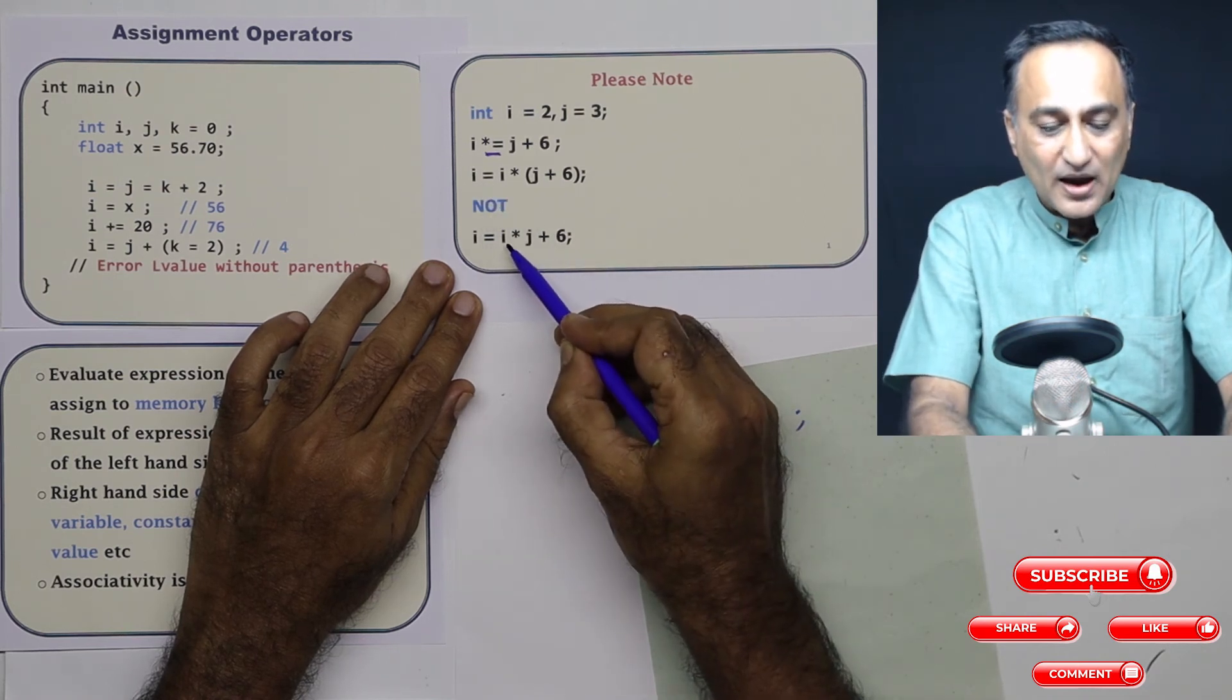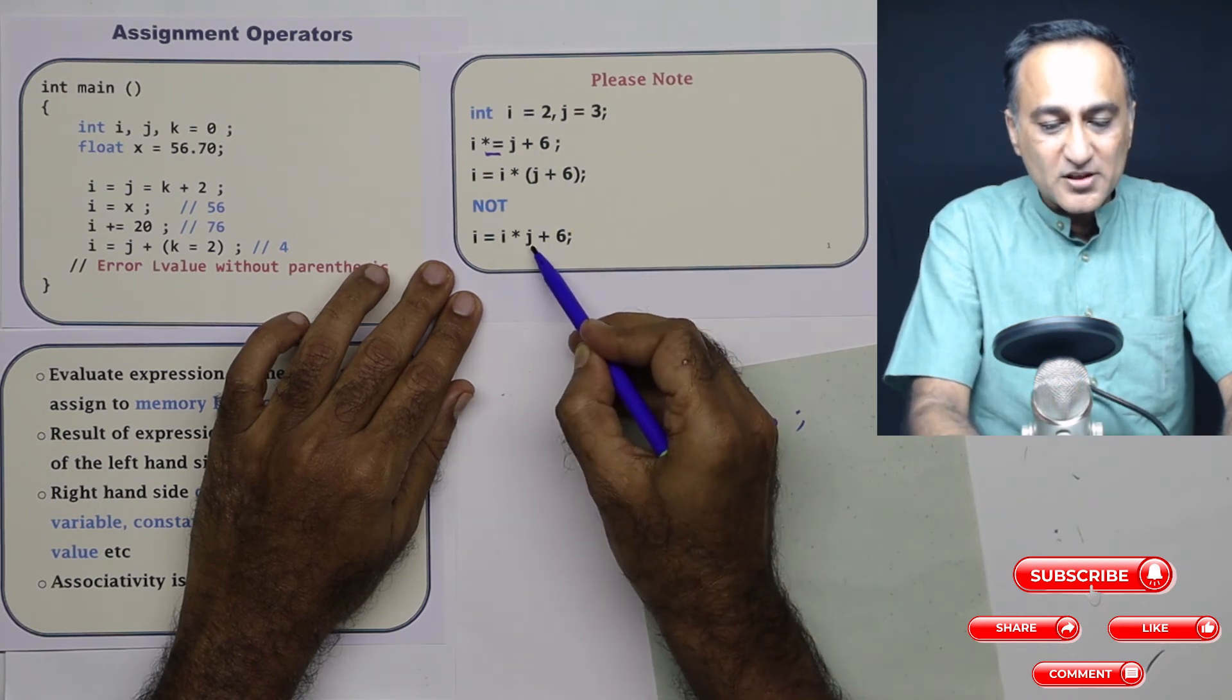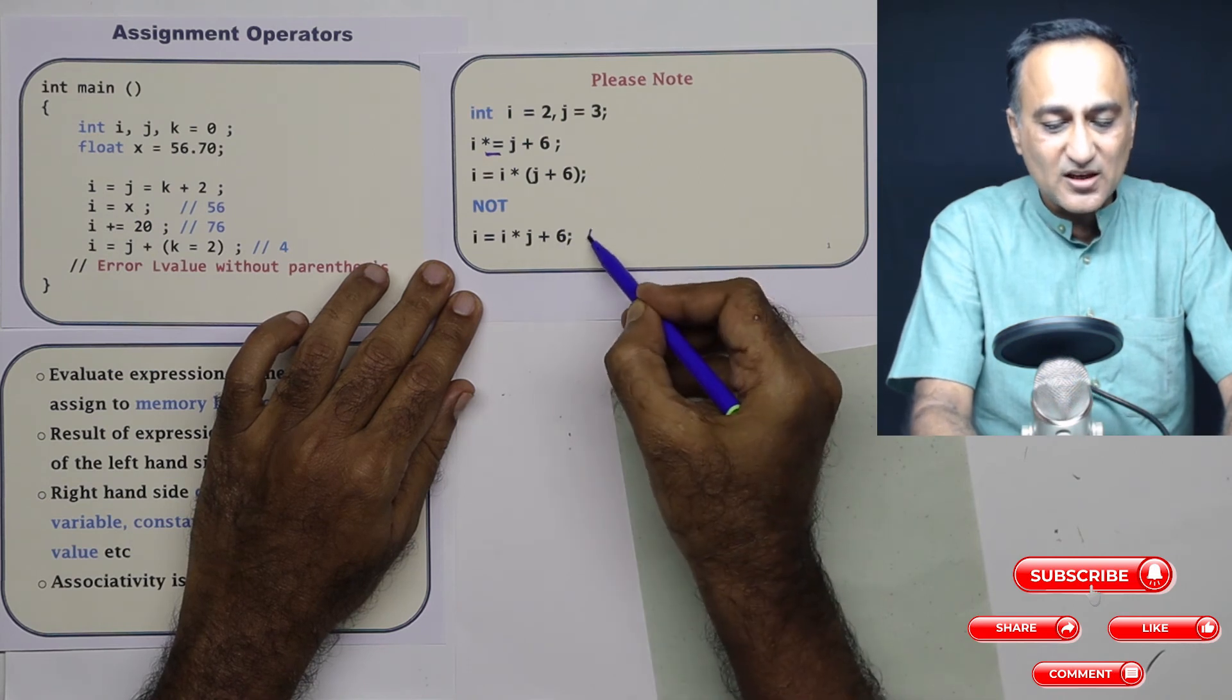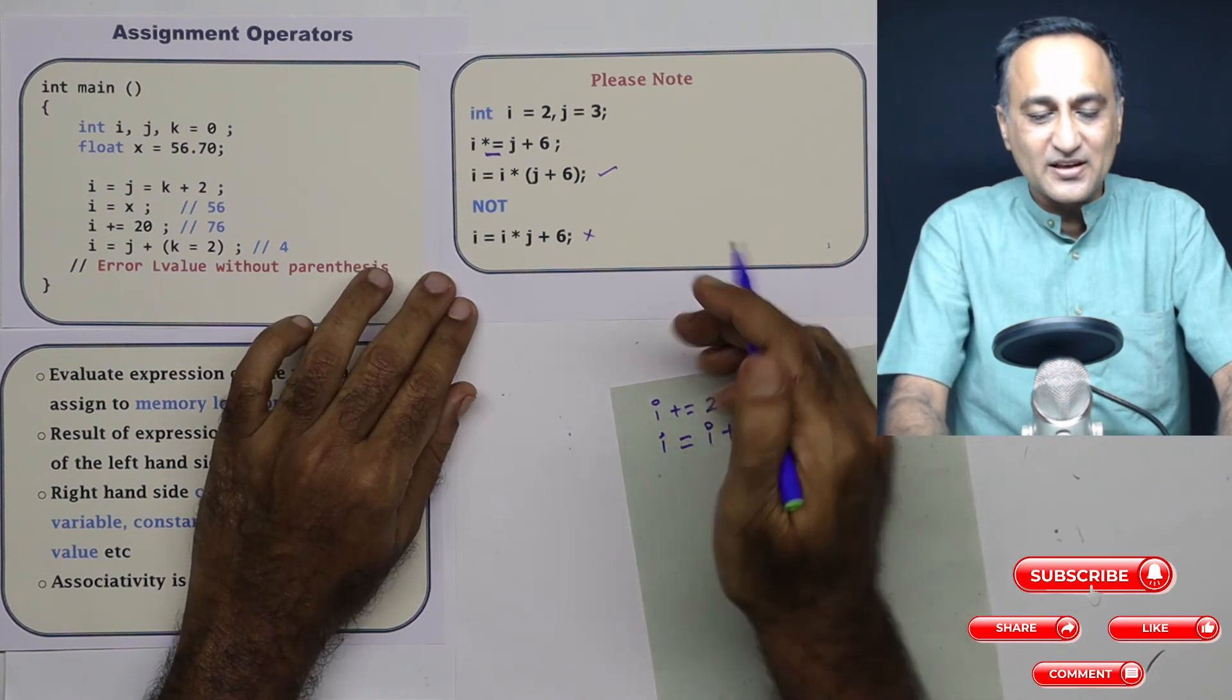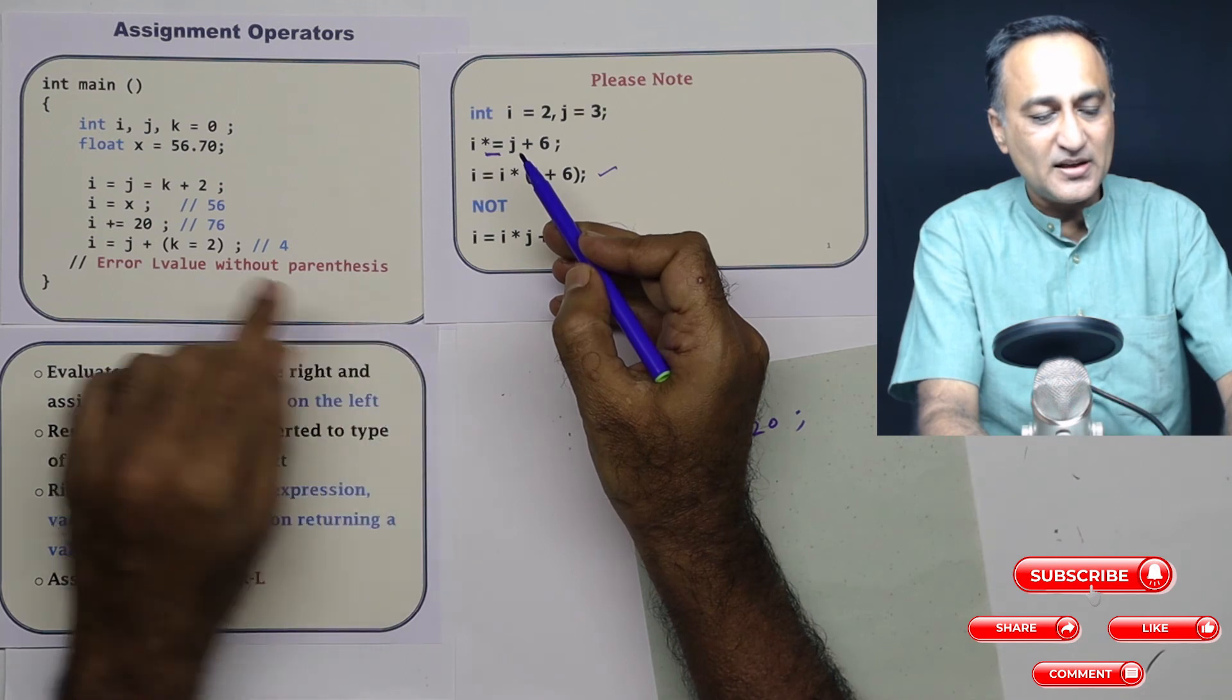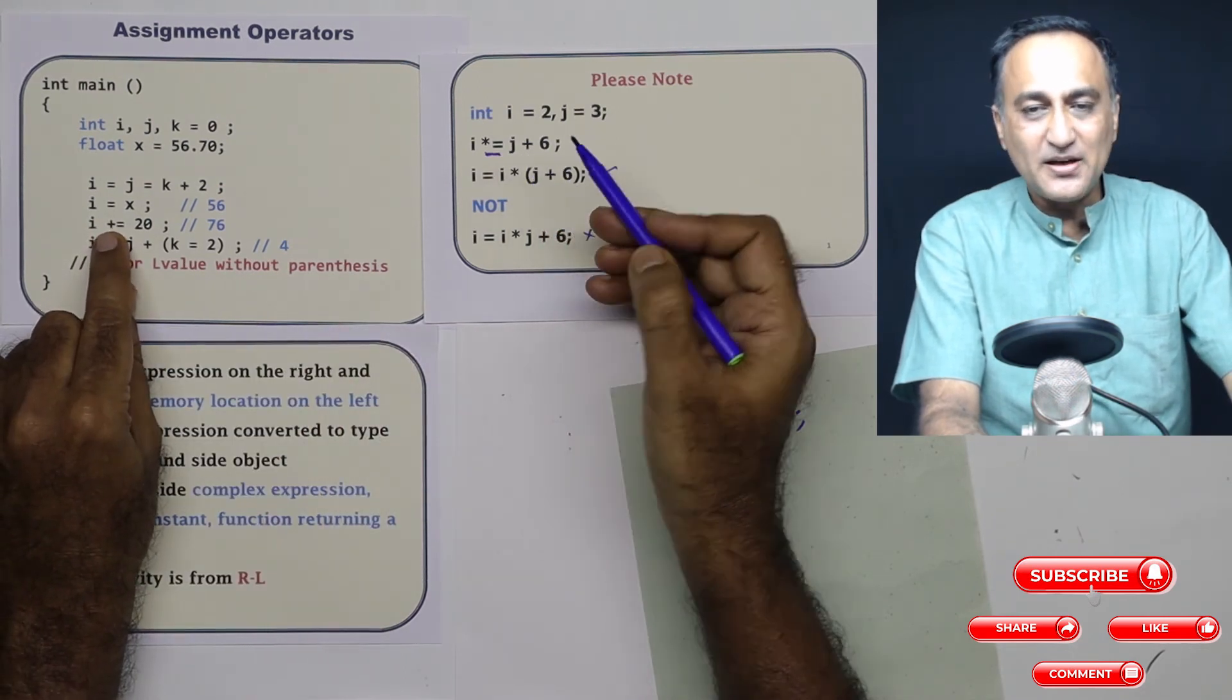If you did it the wrong way, i into j, i was 2, 2 into 3 is going to be 6, 6 plus 6 is 12. So this is the wrong way. And this is the right way how the compiler or C evaluates it internally. So this is an example of a shortcut multiplication operator. This was an example of a shortcut addition assignment operator.